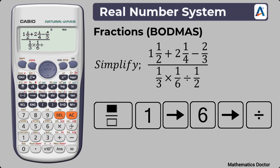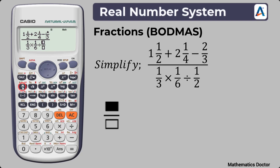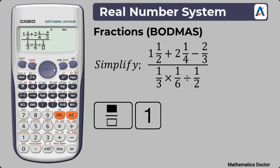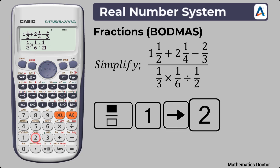The final fraction in the denominator is 1 over 2. Press the fraction key, then press 1 at the numerator. Press the arrow key right so the indicator moves to the denominator box, and press 2. We now have our question nicely written on the screen of the calculator.